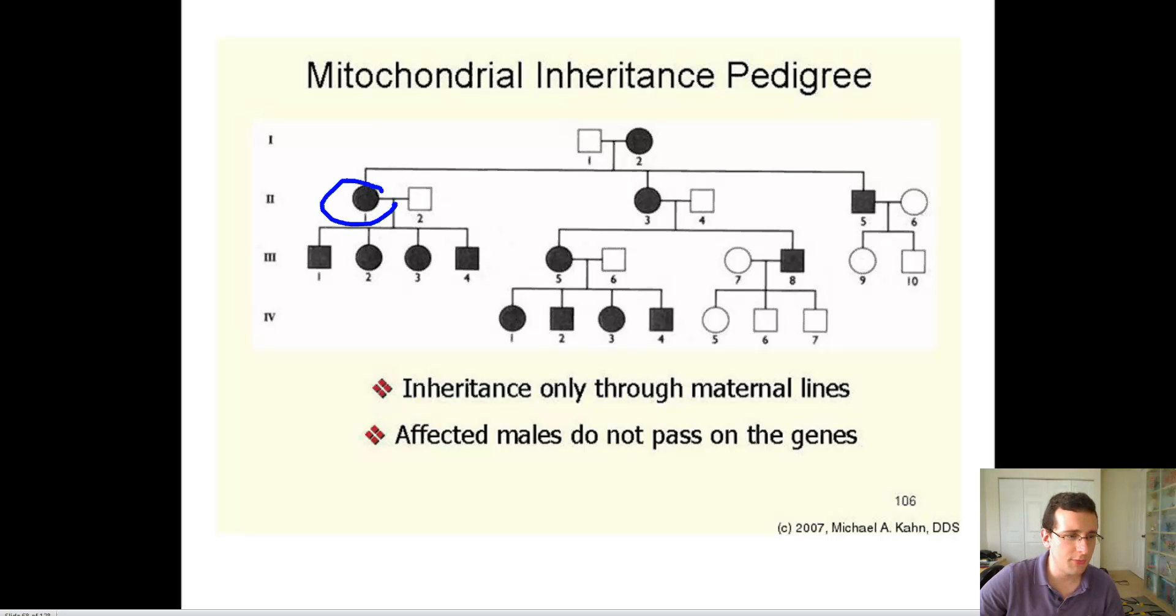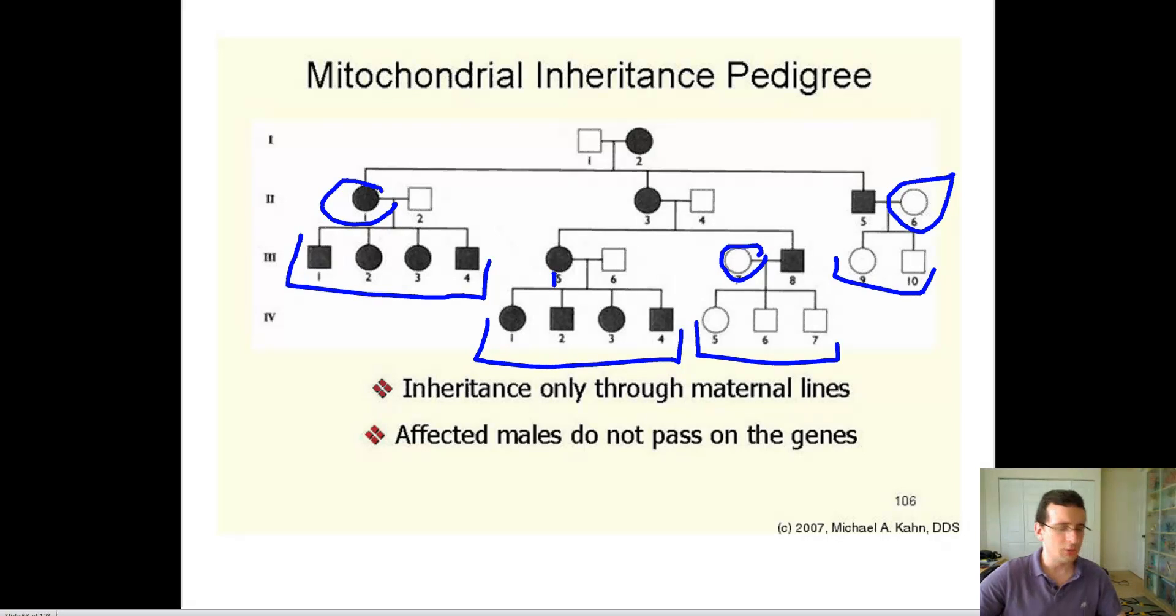Again, this mother has the disease. All the children have the disease. This mother of five over here has the disease. All the children have the disease. This mother does not have the disease. None of the children have the disease. This mother does not have the disease. None of the children have the disease.